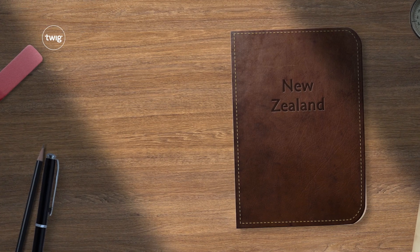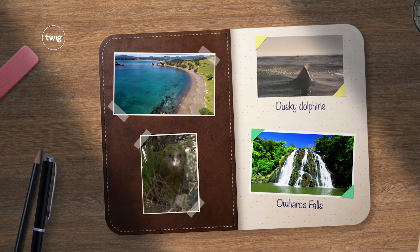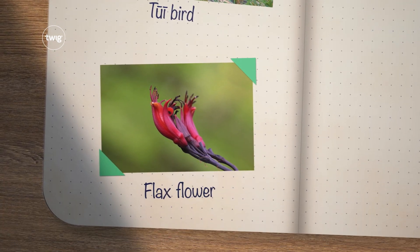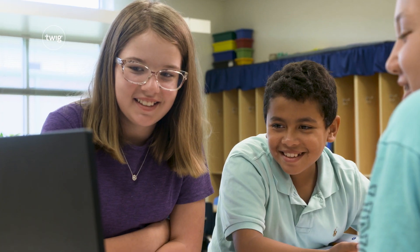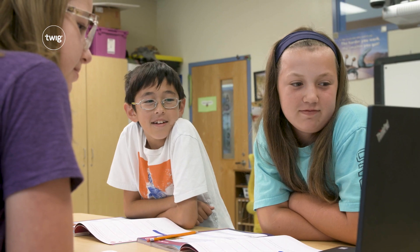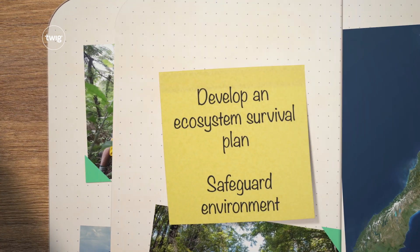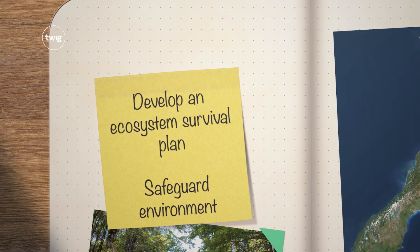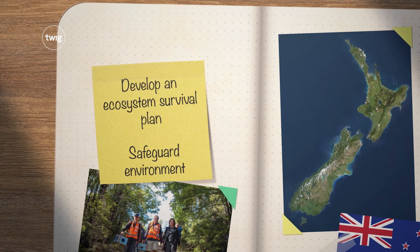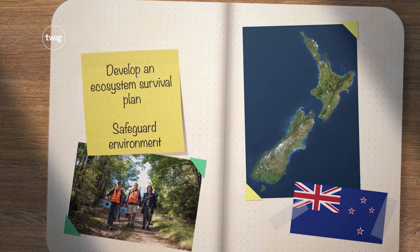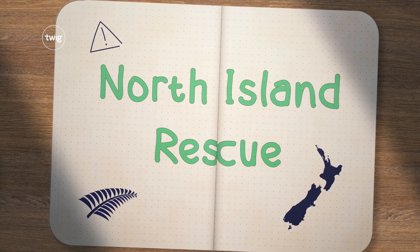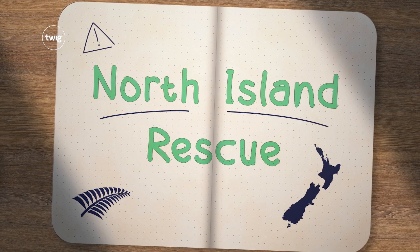New Zealand. Discover the fragile relationships between pollinators and plants that depend on each other, and develop an ecosystem survival plan to safeguard New Zealand's unique environment. The North Island needs your help.